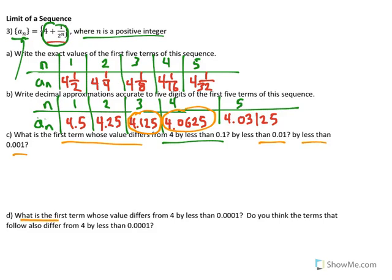Part D asks: what is the first term whose value differs from 4 by less than 1/10,000? And do the terms that follow also differ from 4 by less than 1/1,000? This leads to the idea of what we mean by the limit of a sequence, which we will look at now.